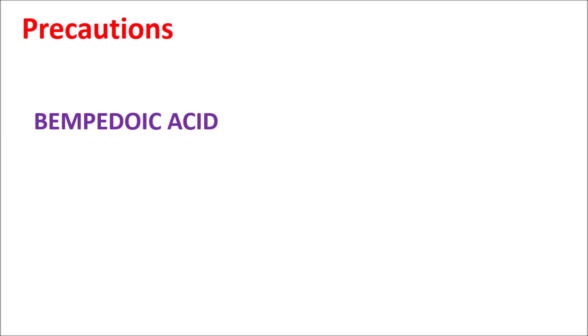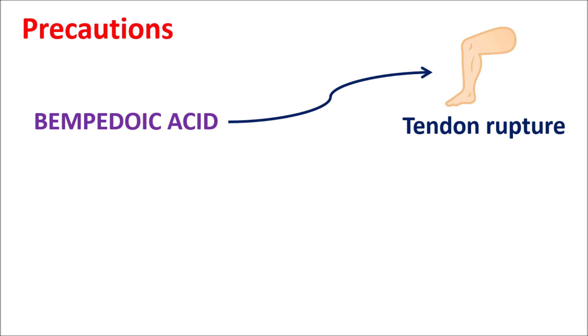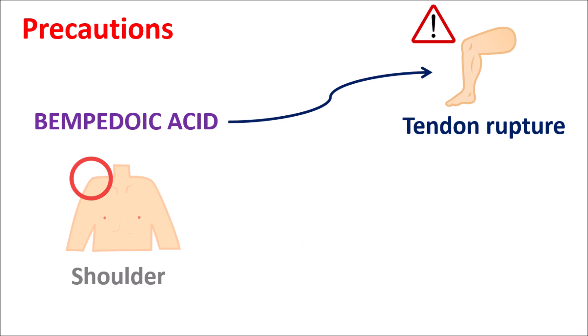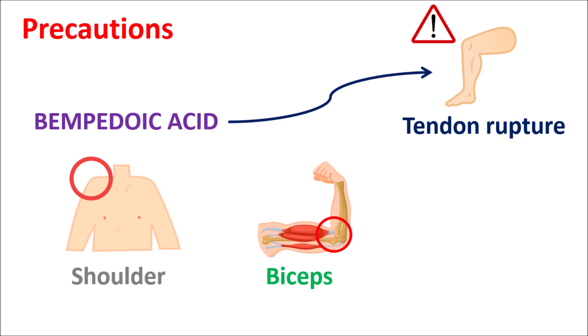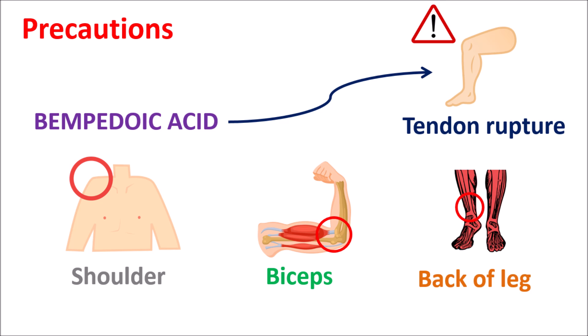A second important precaution is that this drug can affect the tendons and produce tendon rupture. Bempedoic acid can affect the tendons at the shoulder, the tendons at the biceps, and also the tendons at the back of the leg. All these are affected, resulting in weakness of joints and development of inflammation. This is particularly more important in elderly people who have weak tendons, so in such people this drug should be carefully used.